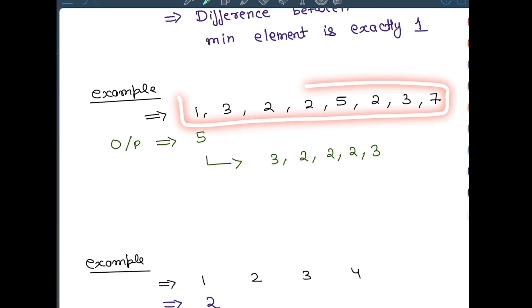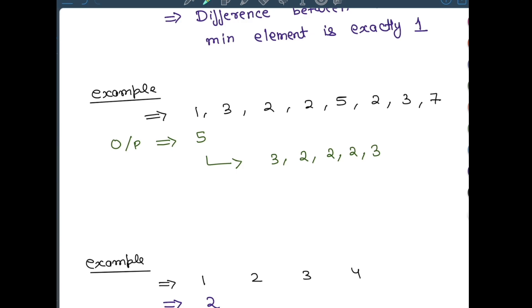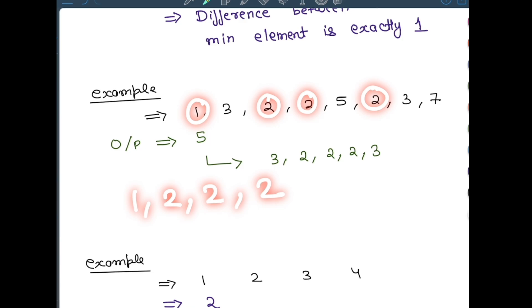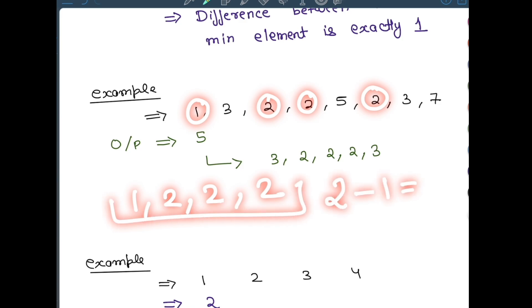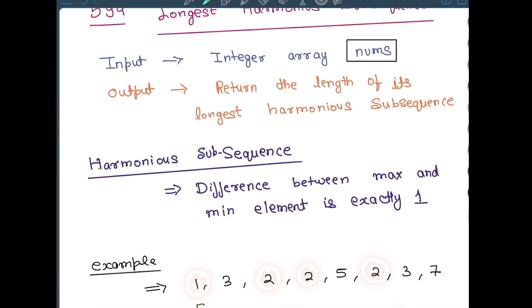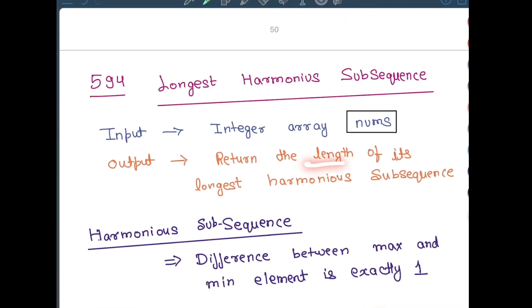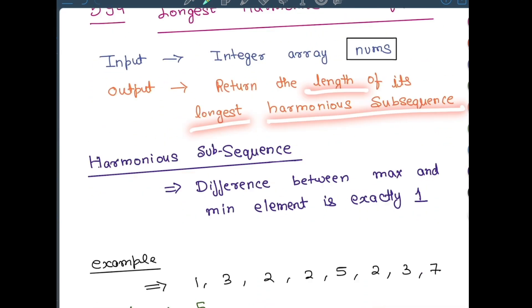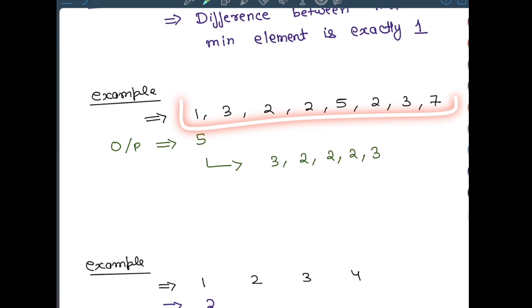In this same array there is another harmonious subsequence which is [1, 2, 2, 2, 2]. This is also harmonious because the maximum is 2, the minimum is 1, and their difference is exactly 1. But the length is 4. The previous subsequence had 5 elements. You need to find the length of the longest harmonious subsequence, and that is why the output in this case is 5.